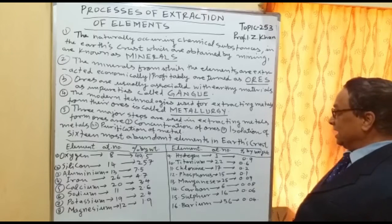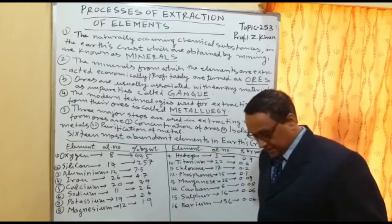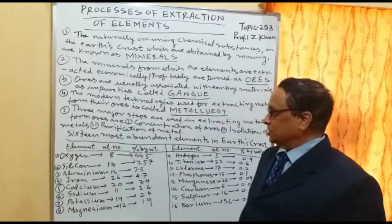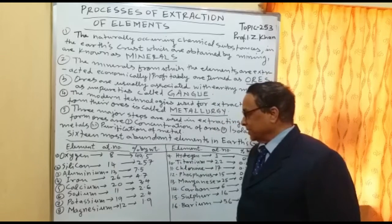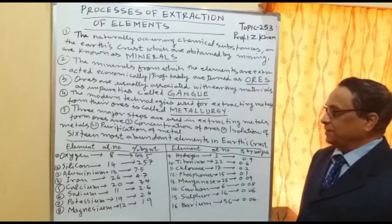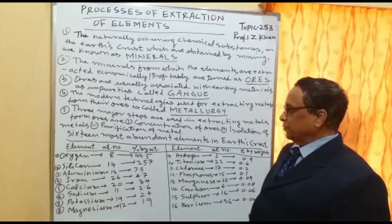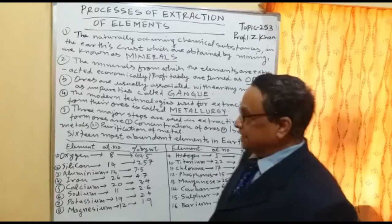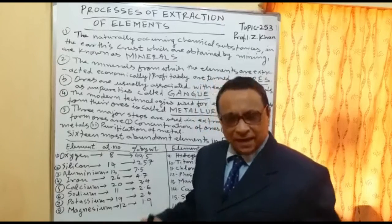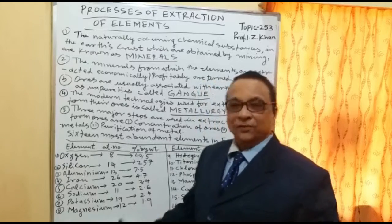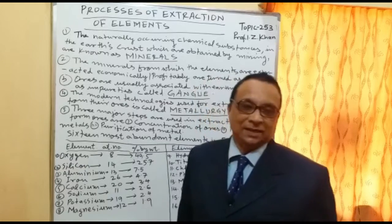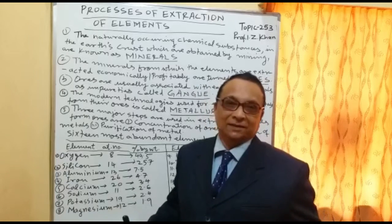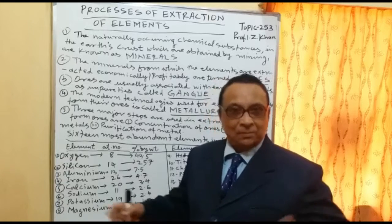The sixteen most abundant elements in the earth's crust: first is oxygen, atomic number 8, percentage 49.5%. Second is silicon, atomic number 14, 25.7% by weight. This earth is, if you go anywhere, you will find silicon dioxide, so we can call it a silicon planet — everywhere there is silicon in combined state.